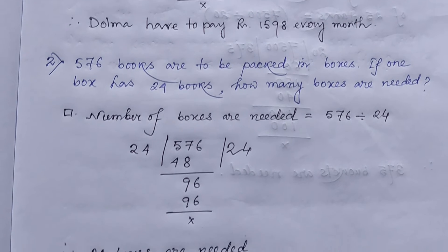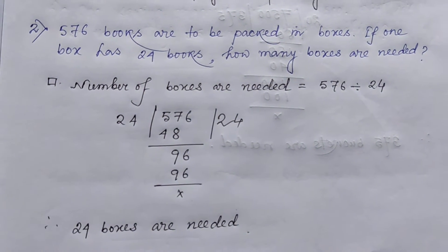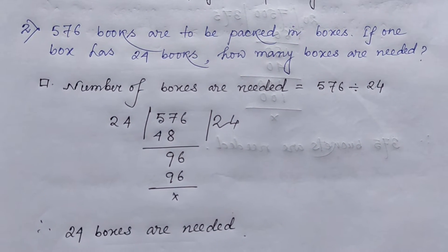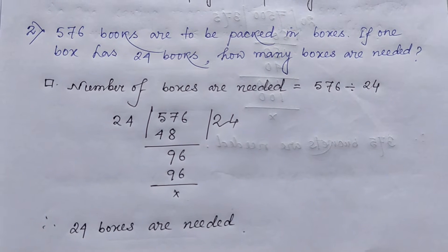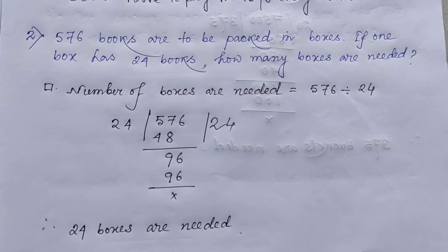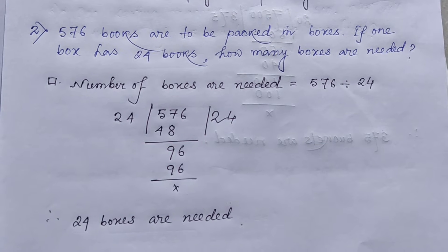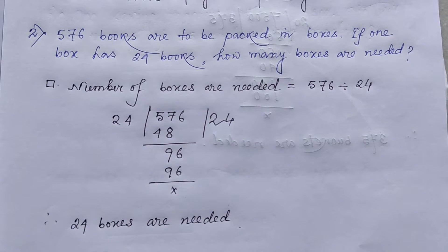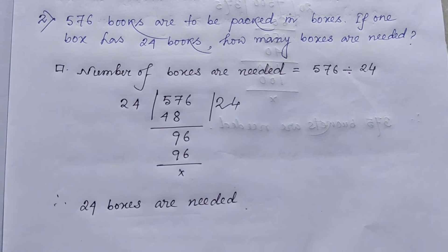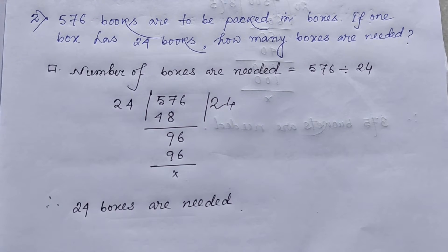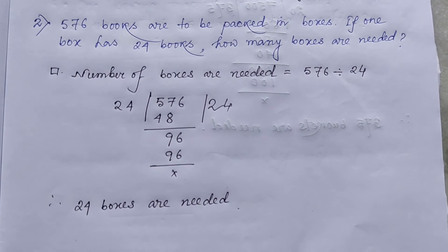Next come to the second number. Number 2. 576 books are to be packed in boxes. If one box has 24 books, how many boxes are needed? So here, number of boxes needed 576 divided by 24.